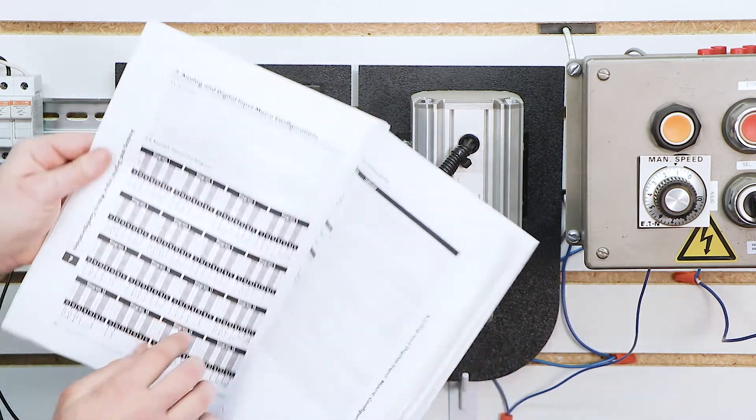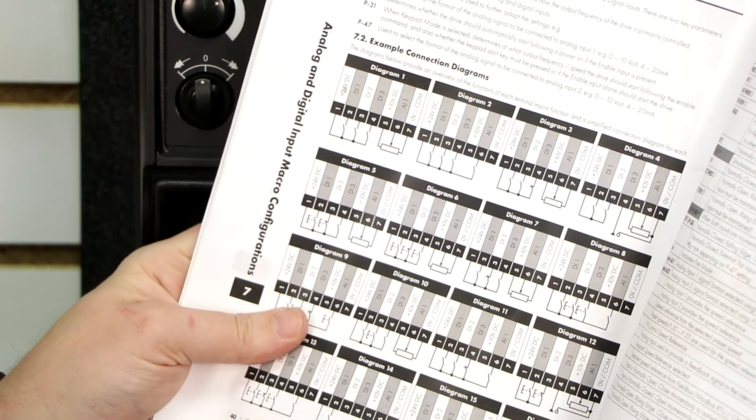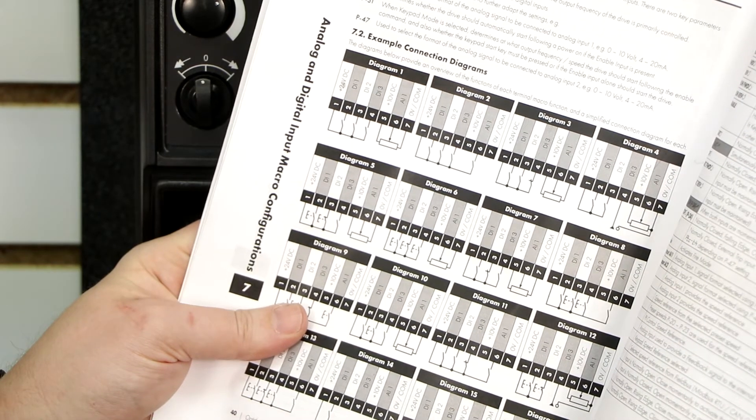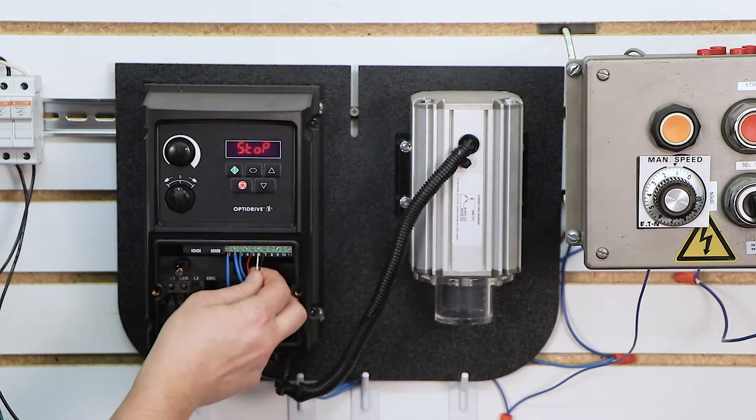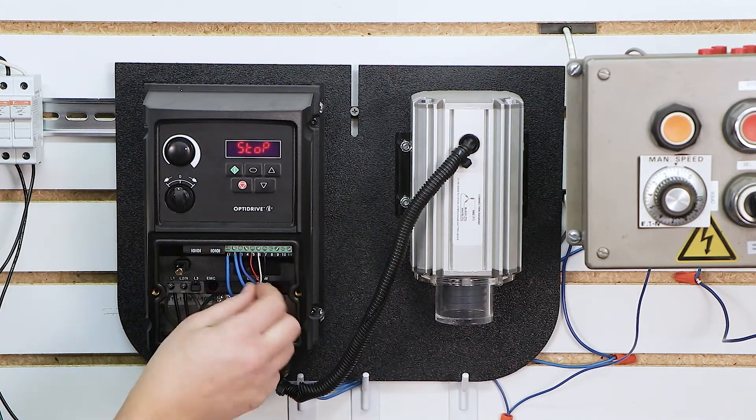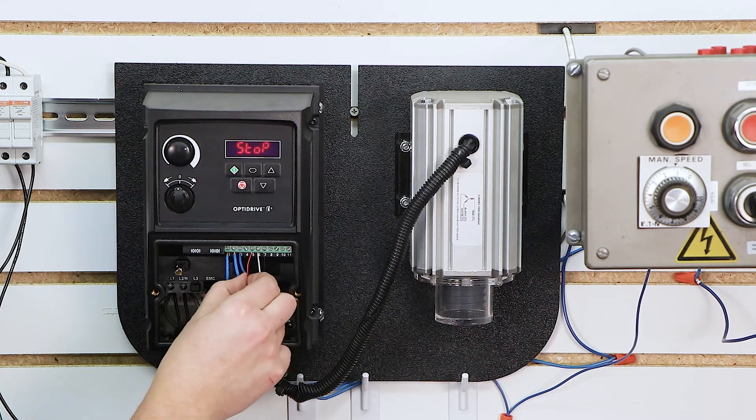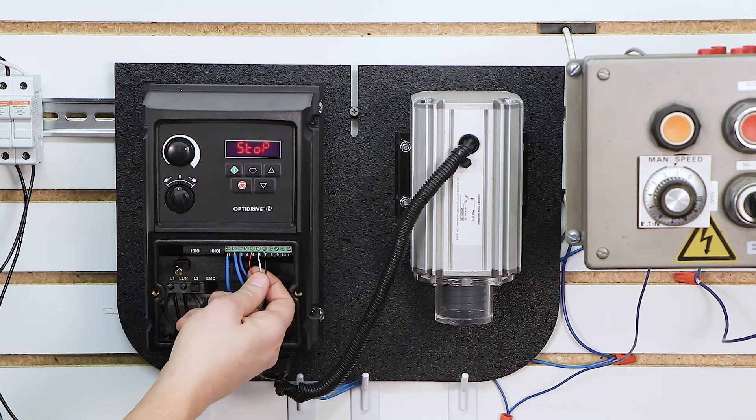Lastly, we can look at our analog input wiring here. 5 is plus 10 volts on our speed pot. 6 is our analog reference or analog input from the speed pot. And 7 is our common on our speed pot. You'll probably need to look at the back of your speed pot to match those. These colors may not match exactly what yours is. But for mine, my plus 10 volts on my pot was red, my signal was white, and my common was black. So that's what I wired to those.